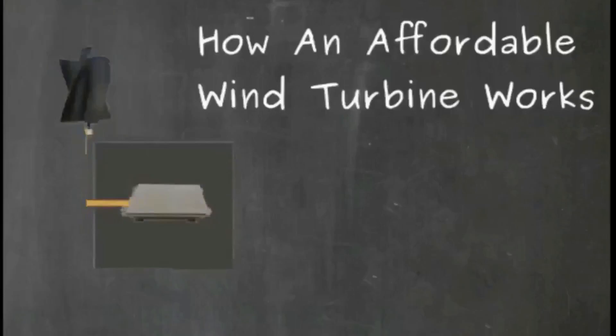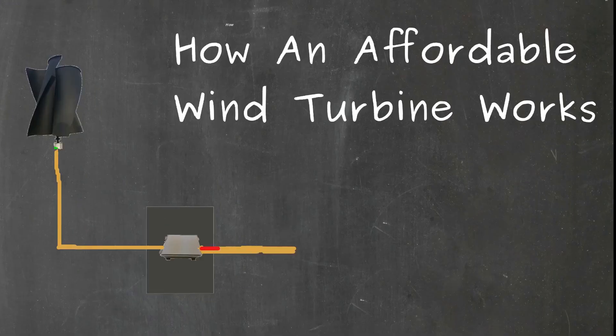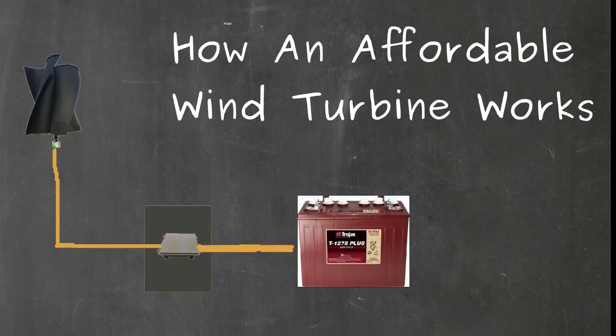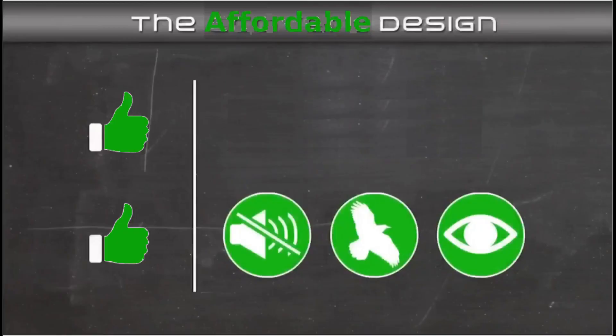The charge controller regulates battery charge voltage. The charge controller then sends DC power to the batteries to charge the batteries. Affordable Wind Turbines wind turbine can charge a single battery or a large group of batteries. Affordable Wind Turbines builds many types of vertical axis wind turbines.